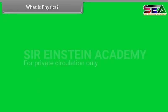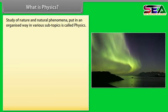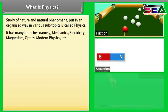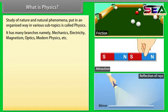What is physics? Study of nature and natural phenomena, put in an organized way in various subtopics, is called physics. It has many branches, namely mechanics, electricity, magnetism, optics, modern physics, etc.